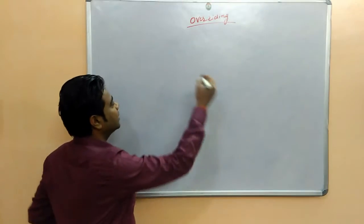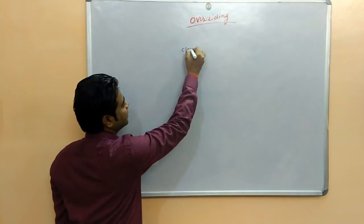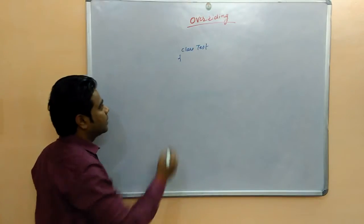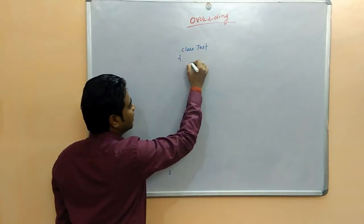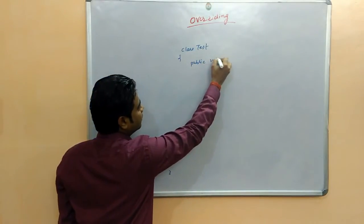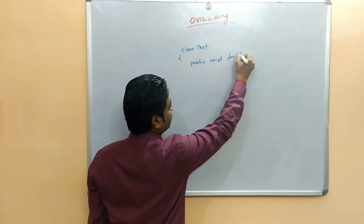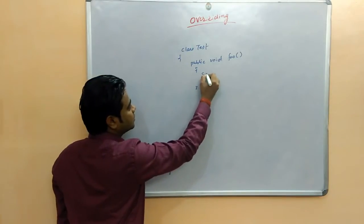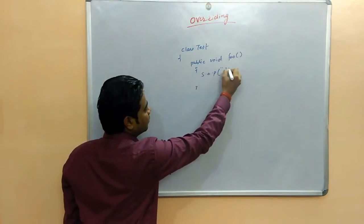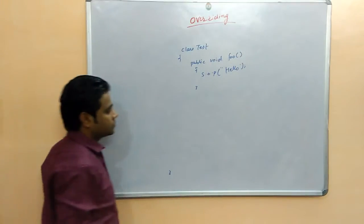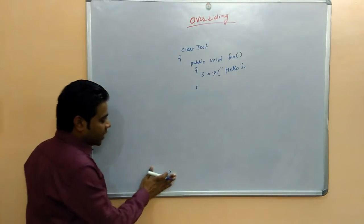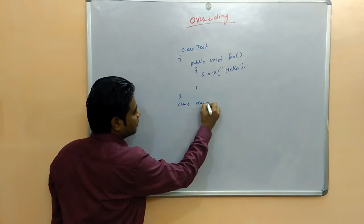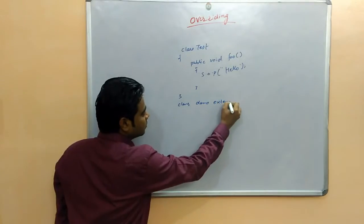Method overriding is a simple example. We have class test with a public void foo method. In this method, system.out.println prints hello. Overriding means that when we have class demo, we extend the class test.